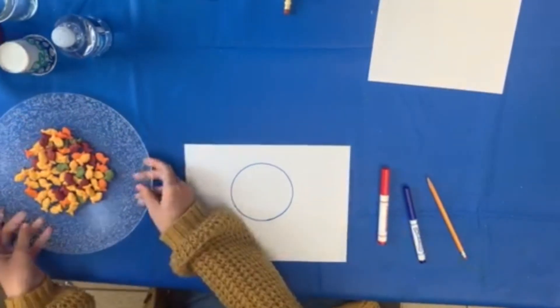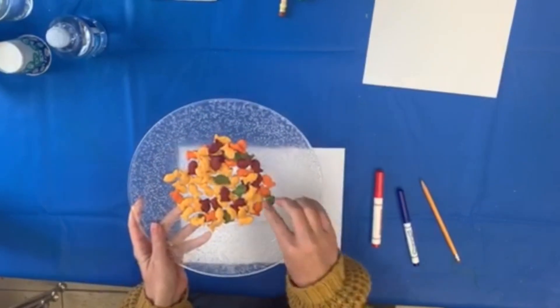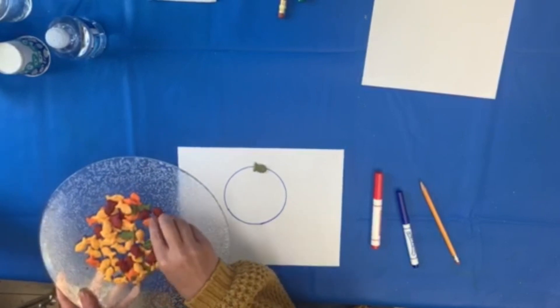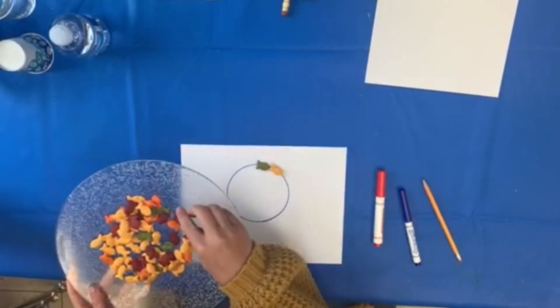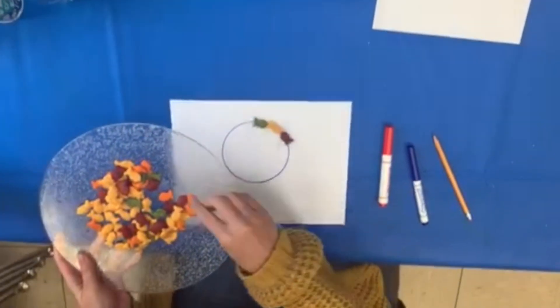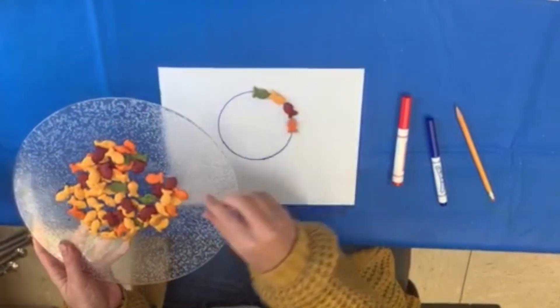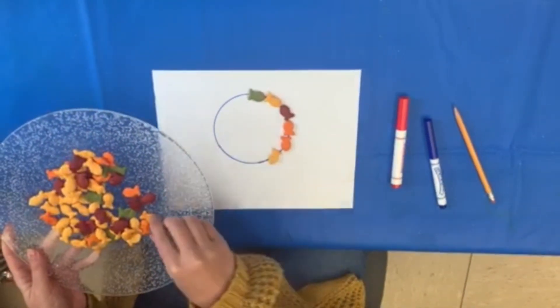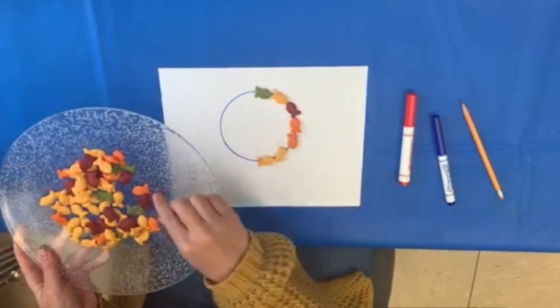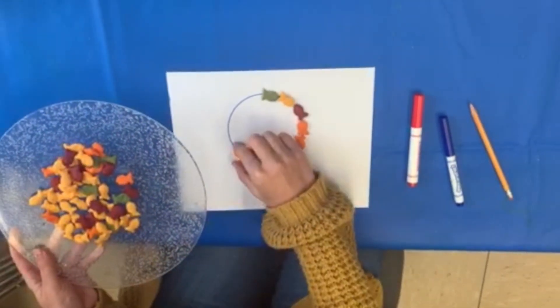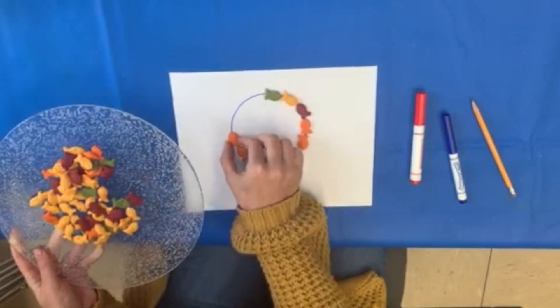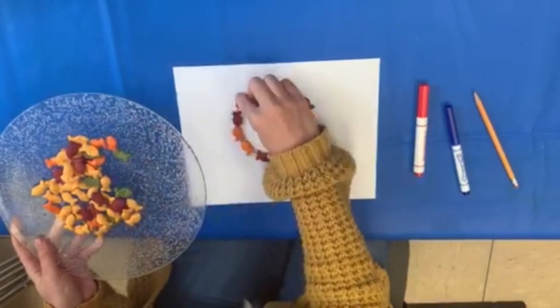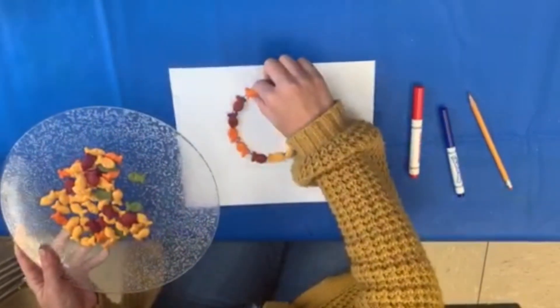Now we're going to take our goldfish and count how many goldfish can go around the circle. Count with me. One, two, three, four, five, six, seven, eight, nine, ten, eleven, twelve, thirteen. We have thirteen fish.